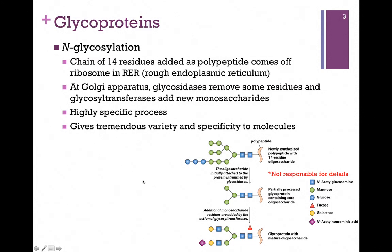At the Golgi apparatus, we have glycosidases — enzymes that clip off some of those carbohydrate residues. Then we have other enzymes, glycosyl transferases, that add others. So we get a very intricate and variable network of carbohydrates attached to our protein, which gives us a lot of specificity as well.